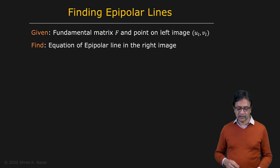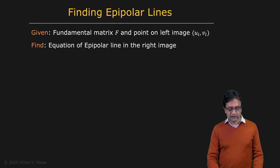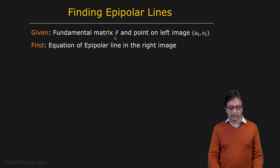So let's see how we find epipolar lines. Let's assume that we are given our fundamental matrix. We have calibrated our system and we're given a single point in the left image UL, VL. What we want to do is to find the epipolar line in the right image.